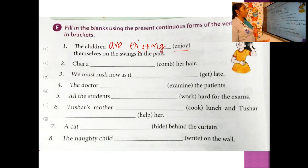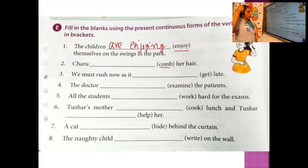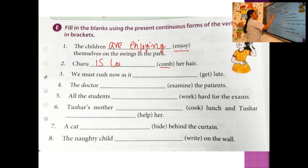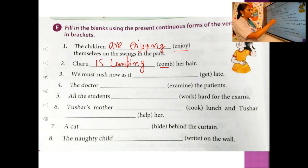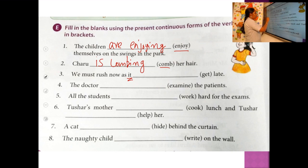Second sentence: 'Charu dash her hair.' The verb is 'comb.' Charu is singular, so you select 'is.' Charu is combing her hair. Third sentence: 'We must rush now as it dash late.' The verb is 'get.' 'It' is considered singular, so: it is getting late.